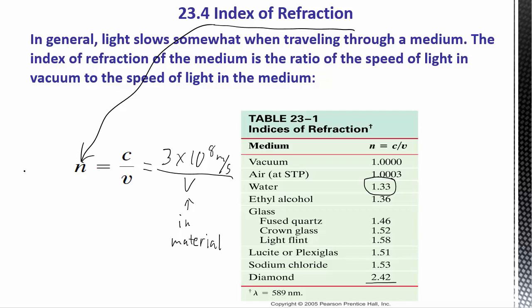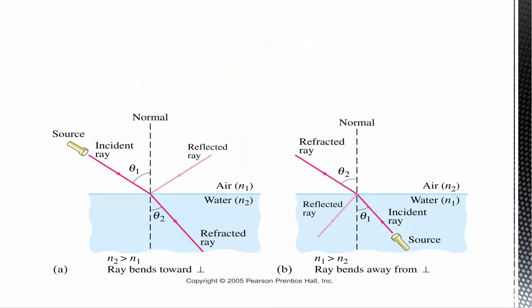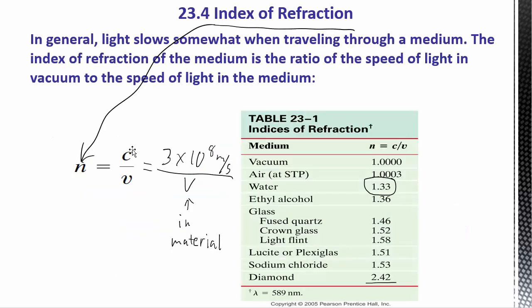So what this means is if n is larger, that means that the speed of light is slower in that material because you're dividing by a smaller number here. So that's going to make n larger. And then c is constant. So what that does is if I move from the air over here, we've got n equals 1, approximately 1. There's no units on n, by the way, which you can see because these are both velocities. So the meters per second will cancel out.